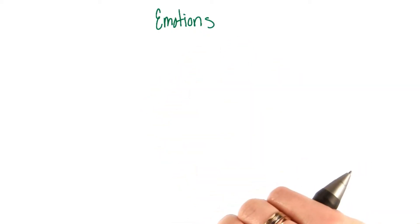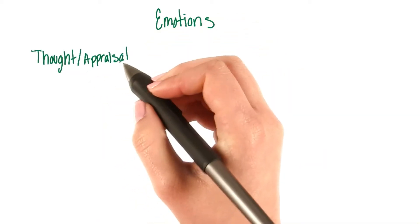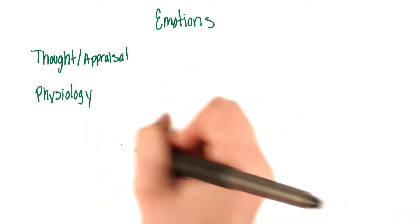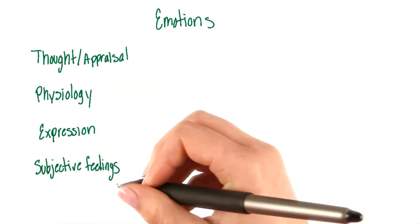Emotions involve four different response systems: our thought and appraisal, our physiology, our expression, and our subjective feelings.